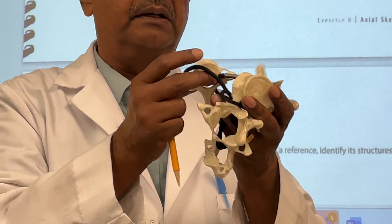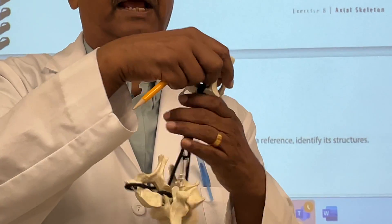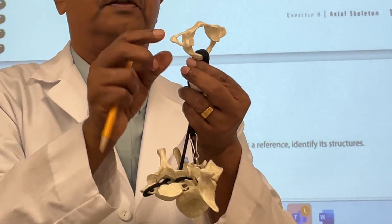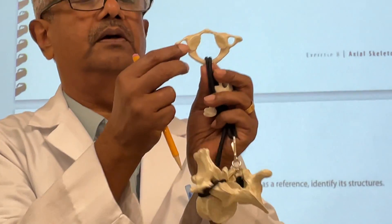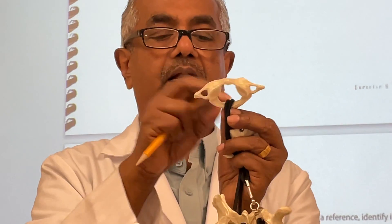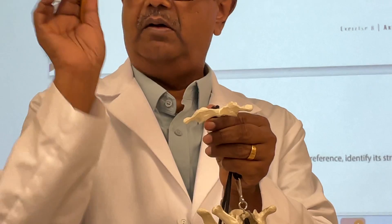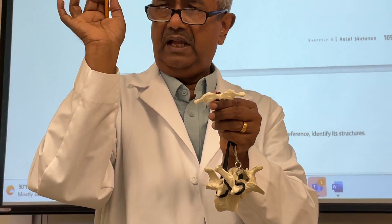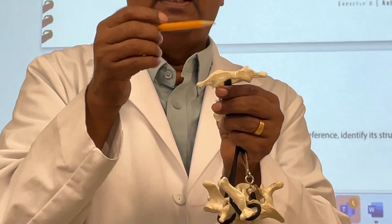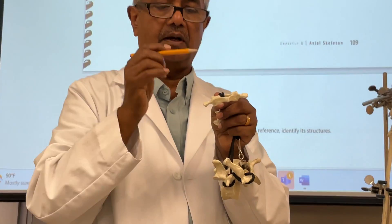There are two more things to know: the atlas and the axis. These two are cervical vertebrae because they have transverse foramina. The atlas is the first cervical vertebra. The occipital bone has a condyle, and the atlas is what fits and attaches to the skull.